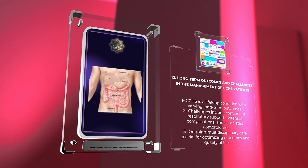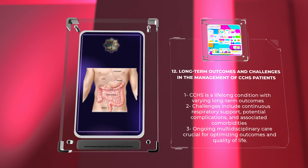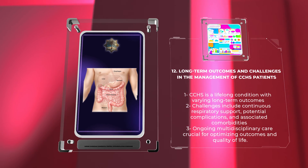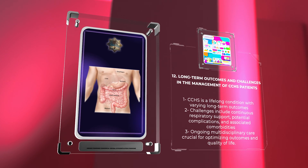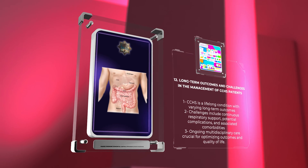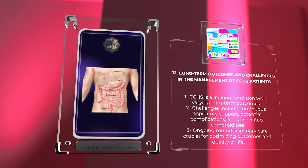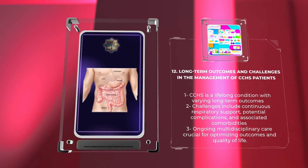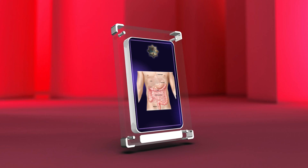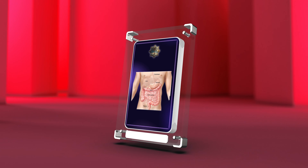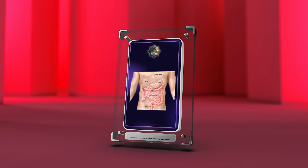CCHS is a lifelong condition with highly variable long-term outcomes — ranging from milder forms with near-normal life expectancy to severe cases associated with significant morbidity and mortality. Challenges in management include the need for continuous respiratory support, potential complications related to invasive interventions, and addressing associated comorbidities. Ongoing multidisciplinary care focusing on respiratory, cardiac, and neurologic aspects is crucial to optimize outcomes and quality of life.